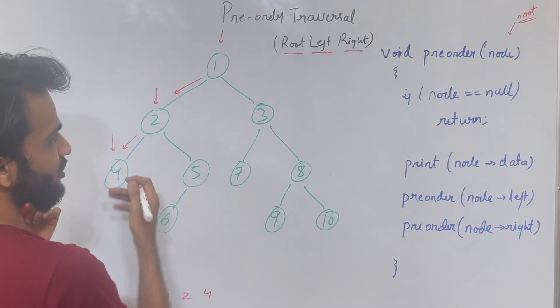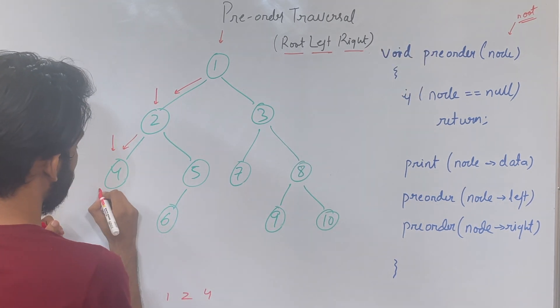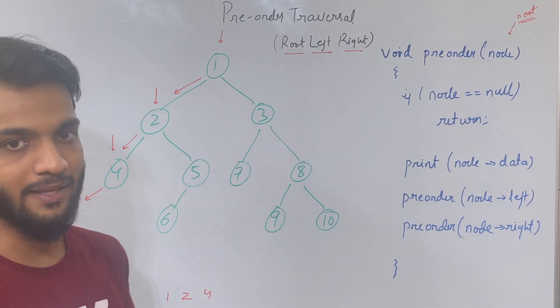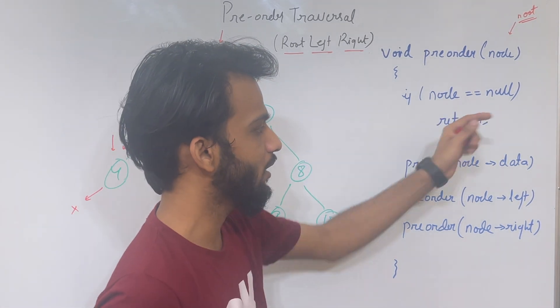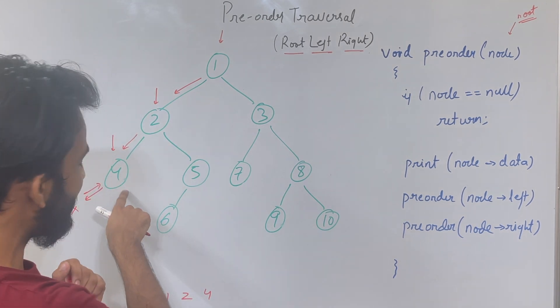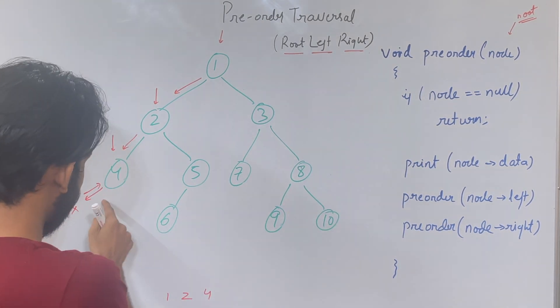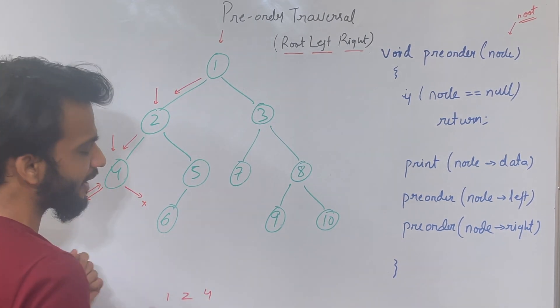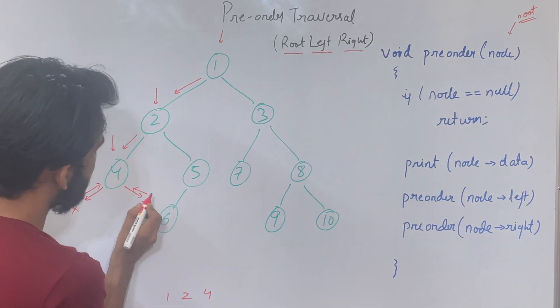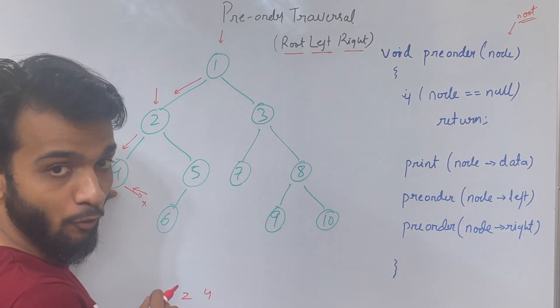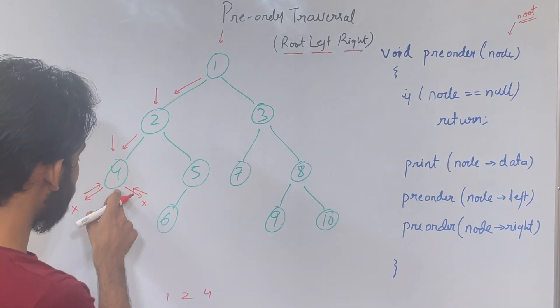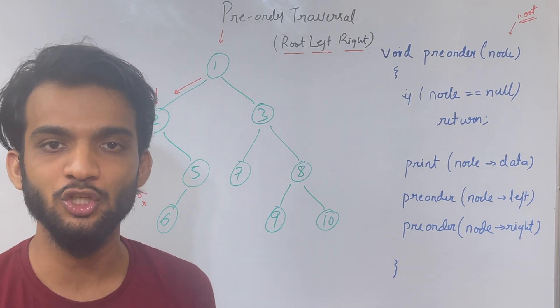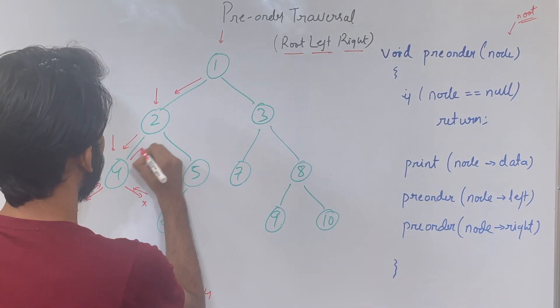Once 4 is printed, we call for the left of 4. The left of 4 is null, so if node is null, it returns. We go back. Print is done, left call is done. Next is right, so we call for right. At right also, we find null, so we return. For node 4, the pre-order traversal—print, left, right—is completed. The recursion is over, so we get back.